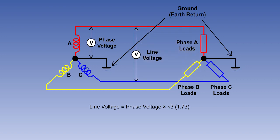The line voltage in a three-phase system can be found by multiplying the phase voltage by the square root of 3, or 1.73.